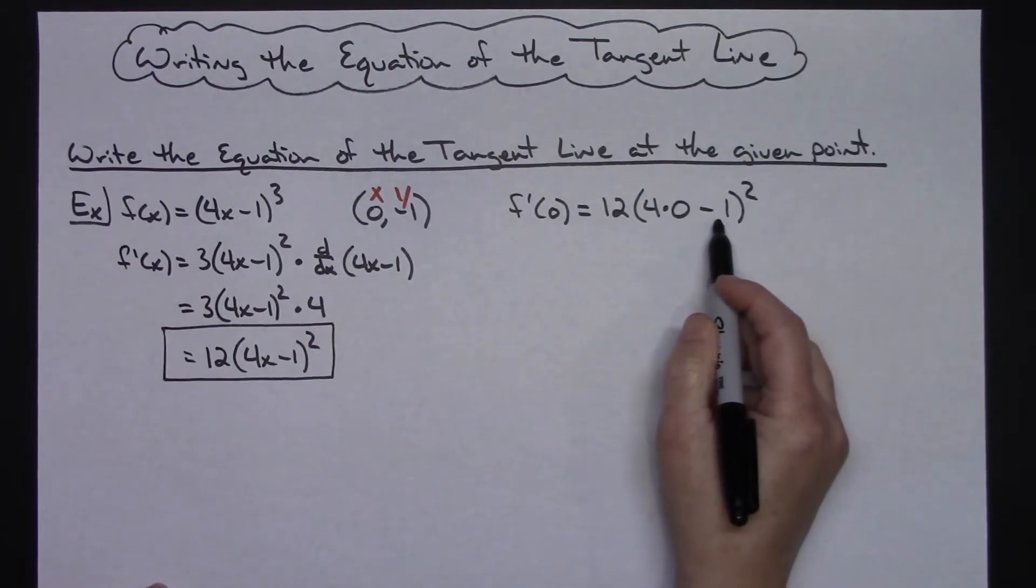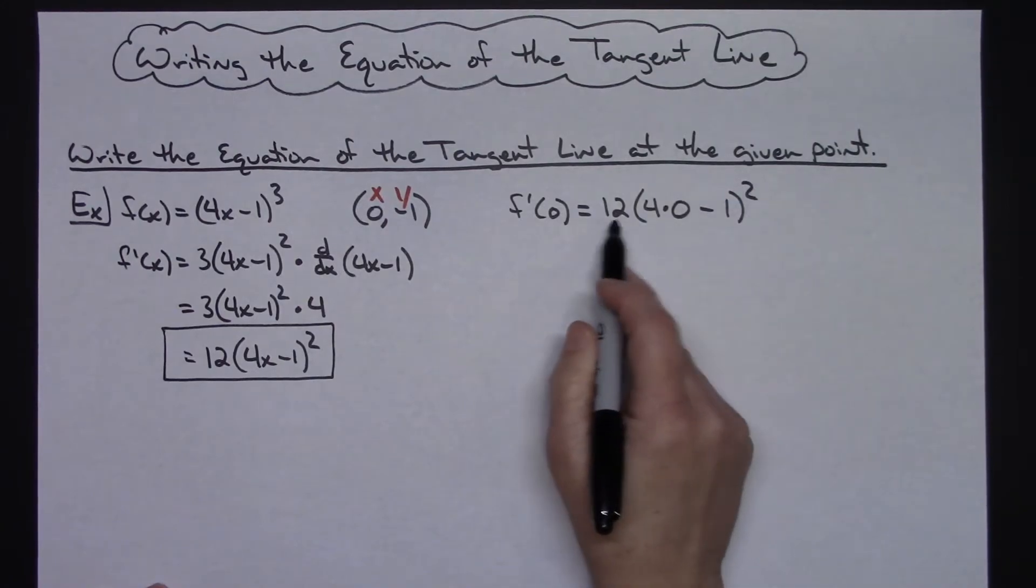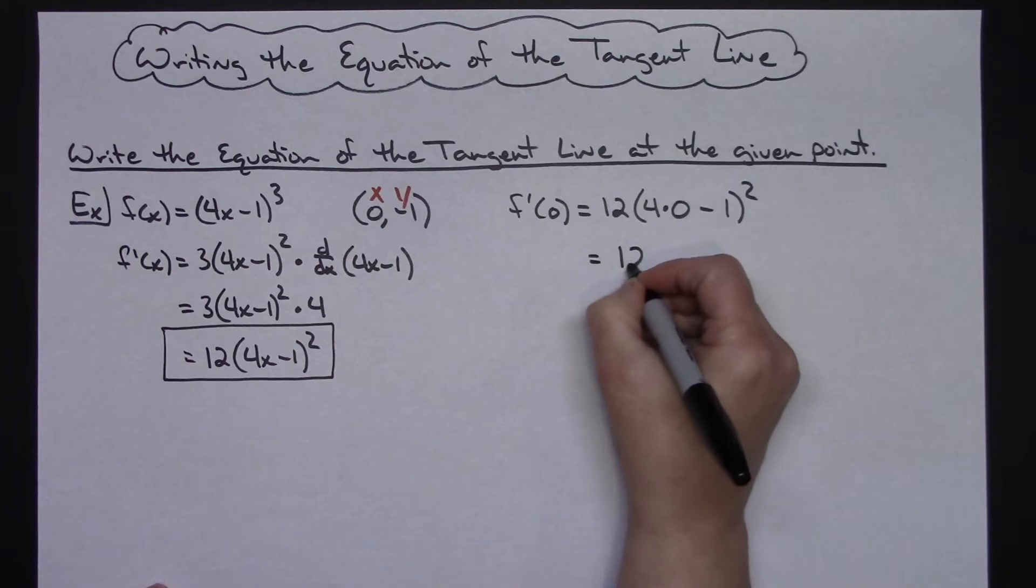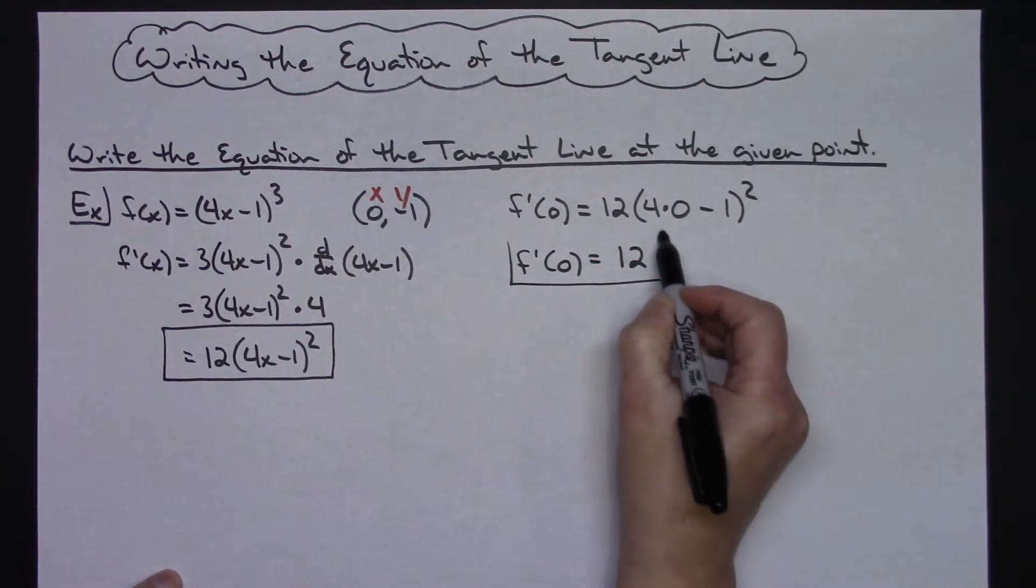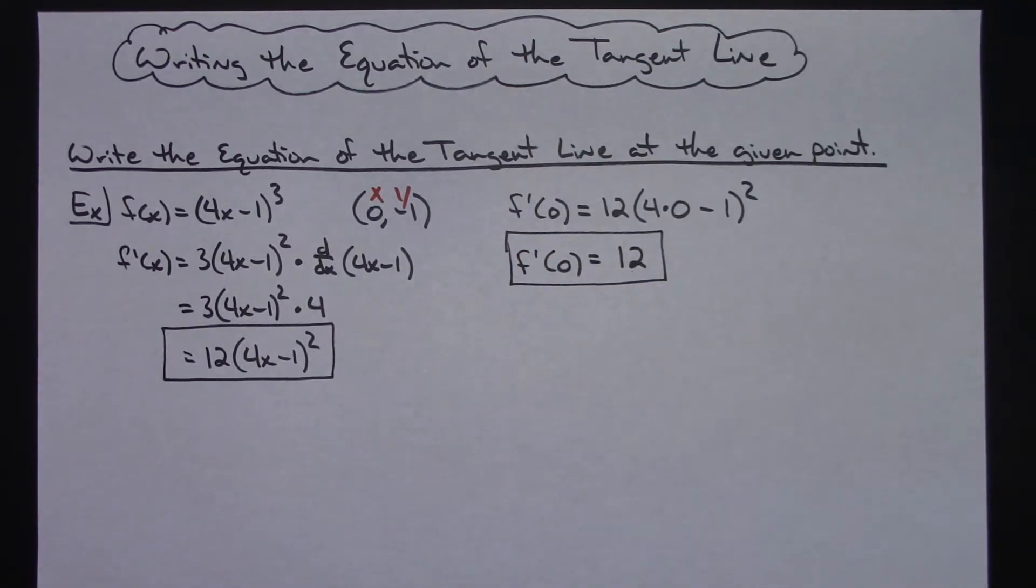0 - 1 gives me -1 in here. -1 squared gives me 1. 1 times 12 is going to give me 12. So the derivative at 0 is 12, which tells me the slope at that point is 12.